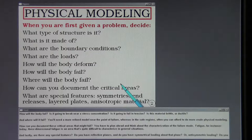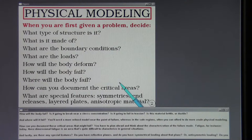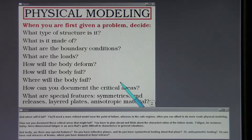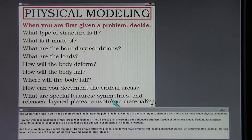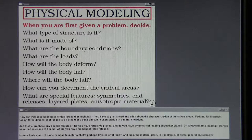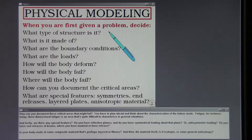Fatigue, for instance, today, three-dimensional fatigue is an area that's quite difficult to characterize in general situations. And lastly, are there any special features? Do you have reflective planes and do you have symmetric loading about that plane or anti-symmetric loading? Do you have end releases of beams where you have moment or force release? Is your body made of some composite material that's perhaps layered or fibrous? And then the material itself, is it isotropic or some general anisotropy?